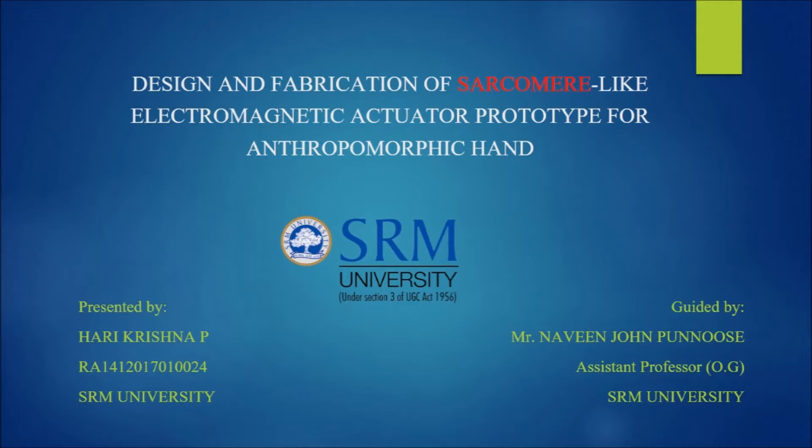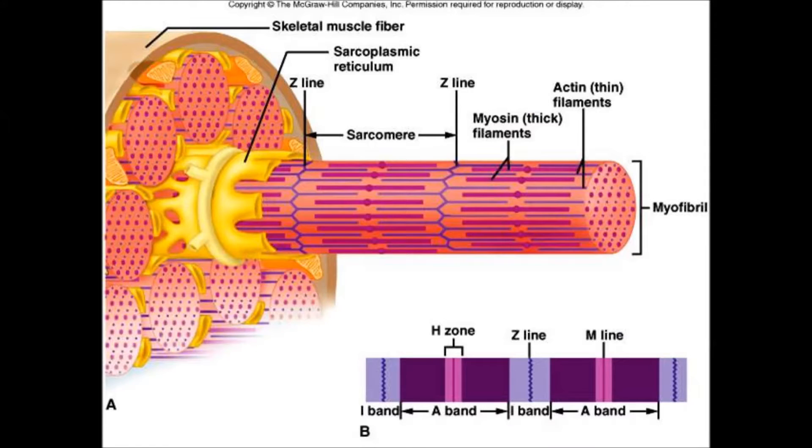The main objective of this project is to design and fabricate a sarcomere-like electromagnetic actuator for anthropomorphic hand. Sarcomere is the basic unit of striated muscle tissue. The flexion of sarcomeres results in the flexion of muscles.